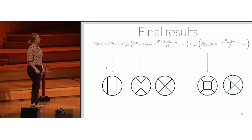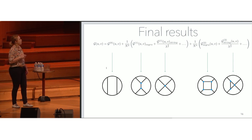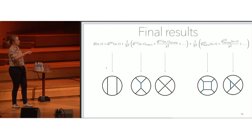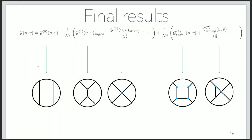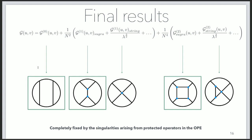Let me summarize the results. We have our four-point function, which we can expand in N: the first term is the disconnected term, the second is supergravity, and then the first stringy correction at tree level. At one loop we have the full sequence: one-loop supergravity and all the α' corrections. I want to stress again the very important fact that both the tree-level supergravity and the one-loop supergravity are completely fixed by singularities arising from the protected operators. Since protected operators don't depend on the coupling constant, this piece of information is very easy to extract. In fact, the full function can be completely recovered by knowing only this protected sector of the theory.